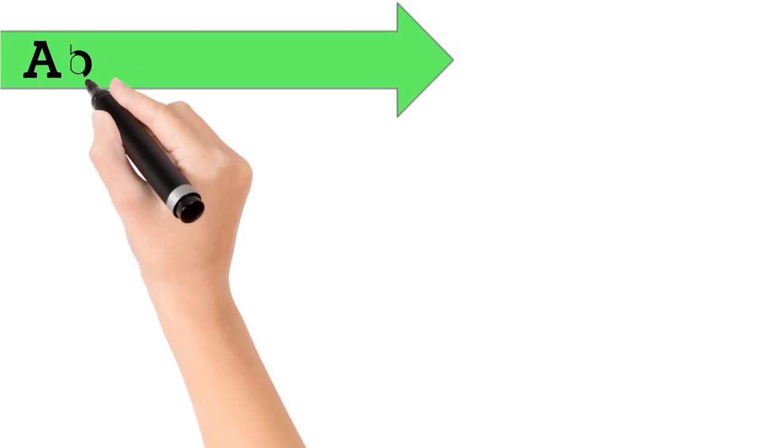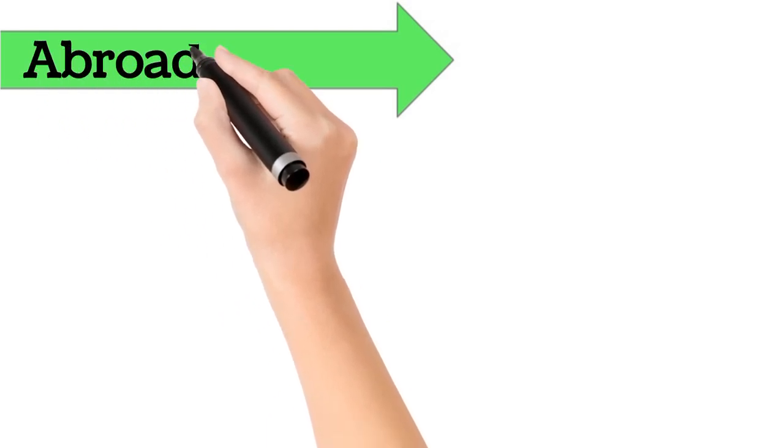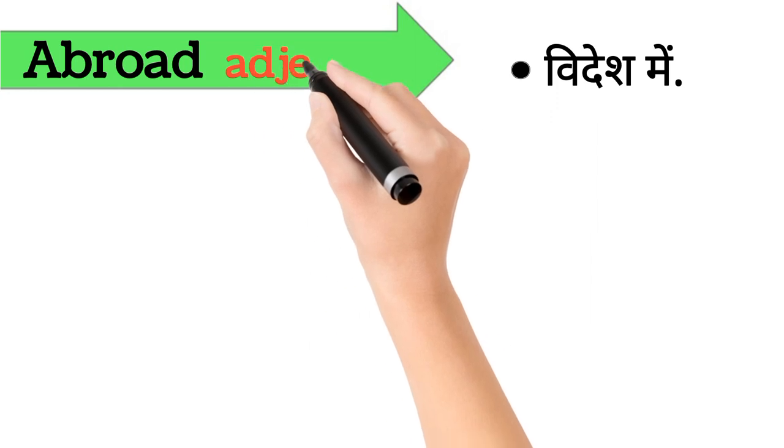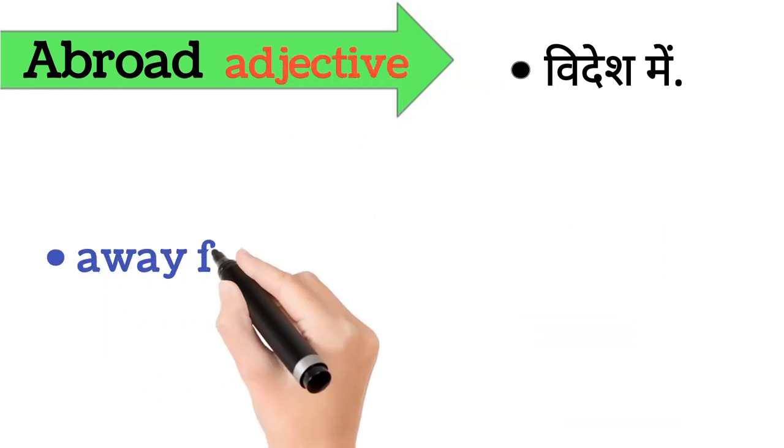Abroad. Abroad ka arth hai, videsh mein. Abroad word adjective form mein aata hai. It's also called, away from one's land.